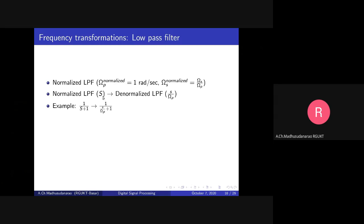You can verify this: S equals j times capital Omega, and S equals j times Omega. If S equals j times 1 equals S by Omega P, this implies S equals j times Omega P. And consider the scenario where j times Omega S by Omega P equals S by Omega P, which implies S equals j times Omega S. So the denormalized low pass filter will have a passband cutoff frequency of Omega P and stopband cutoff frequency of Omega S radians per second.